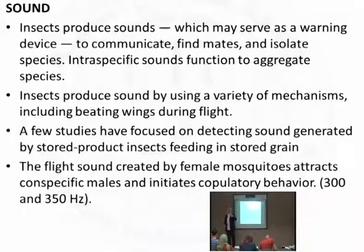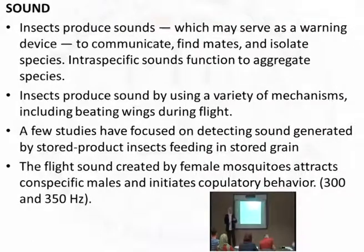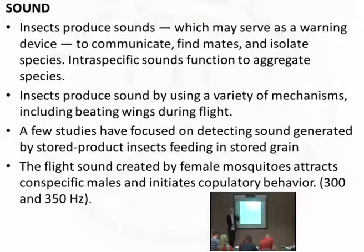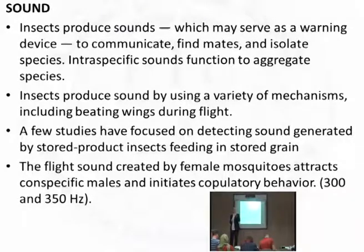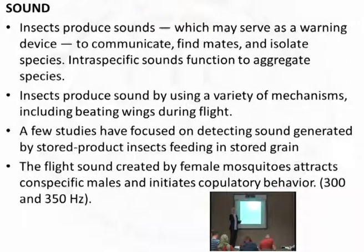Male moths call to female moths, or like the cricket you always hear at night — insects communicate through sounds. Other purposes include isolating species, or fleeing from a natural enemy by producing warning sounds, or to gather at a food source. Bees use dance, but some insects attract others to a food source using specific sounds produced by leg or wing movement or certain stridulation mechanisms. Some insects beat their wings during flight to produce specific sounds, and crickets rub their hind femur — which has comb-like teeth — against their wings to produce that distinctive sound.